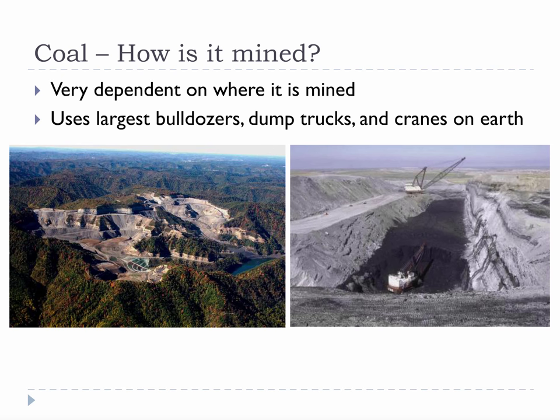Coal is produced by mining, just like diamonds, gold, and other metals, and it uses the largest bulldozers, dump trucks, and cranes on earth. How it is mined is very different depending on where it is found. In the eastern U.S., it is found in mountainous regions, and mountaintop removal strip mining does severe environmental damage. In the western U.S., it is found in the plains and is also strip mined, but because everything is so flat, the environmental damage is far less severe.